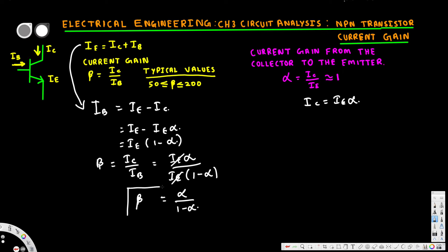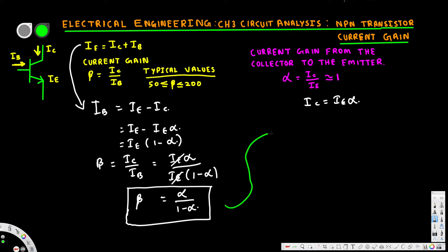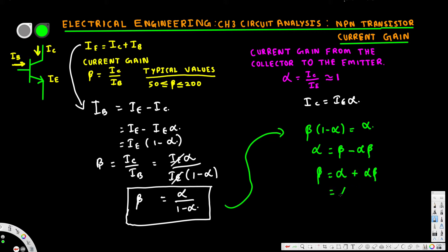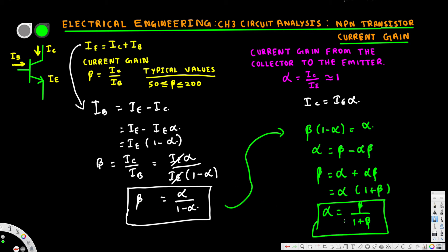Next, we create an equation for alpha by rearranging the beta equation. Beta times (1 minus alpha) equals alpha, which gives alpha equal to beta minus alpha times beta. Rearranging, beta equals alpha plus alpha times beta, and factoring out alpha gives beta equal to alpha times (1 plus beta). Therefore, alpha is equal to beta over (1 plus beta). We have now derived both equations for beta and alpha.